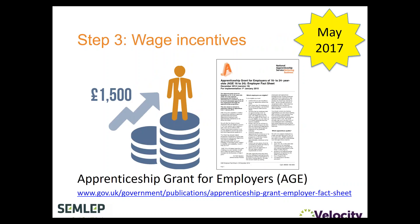We really encourage employers not to go for the rock-bottom national minimum wage if possible. Look at the job role and what you feel it's worth — this will help you attract more applicants and a better calibre. You can visit the Find an Apprenticeship website to get a feel for different levels of apprenticeships and the salaries employers are offering. There are also wage incentives you may be eligible for, such as the Apprenticeship Grant for Employers (AGE Grant), which could entitle you to up to £1,500 towards the cost of employing your apprentice, and other local incentives from local authorities or local enterprise partnerships.